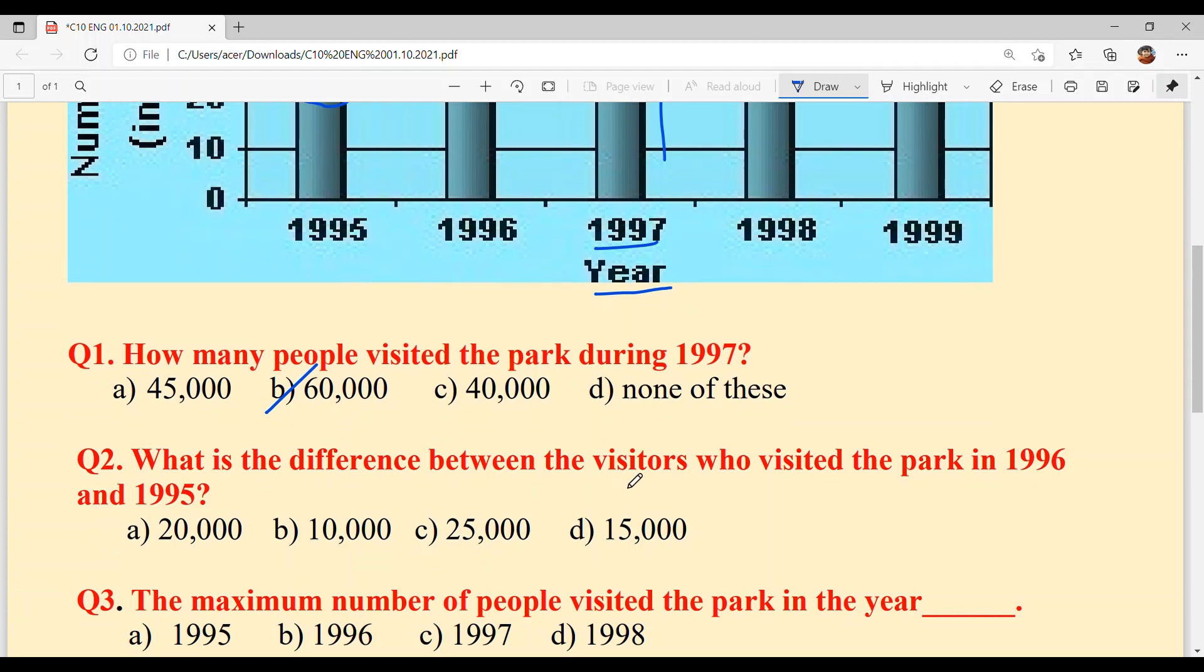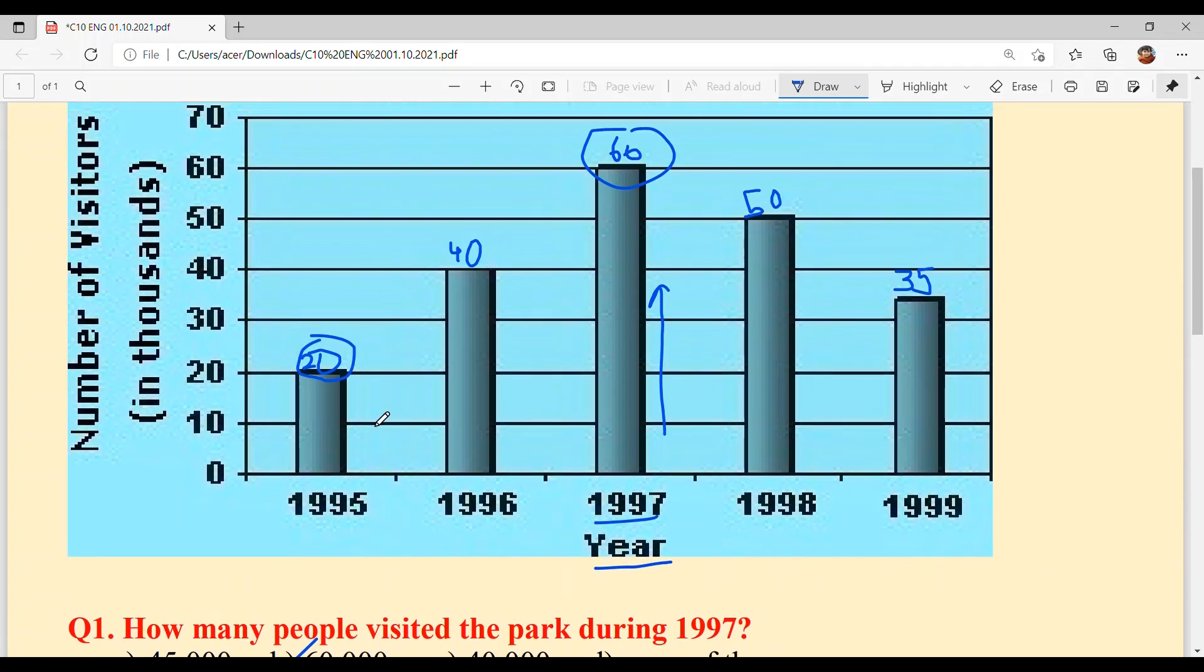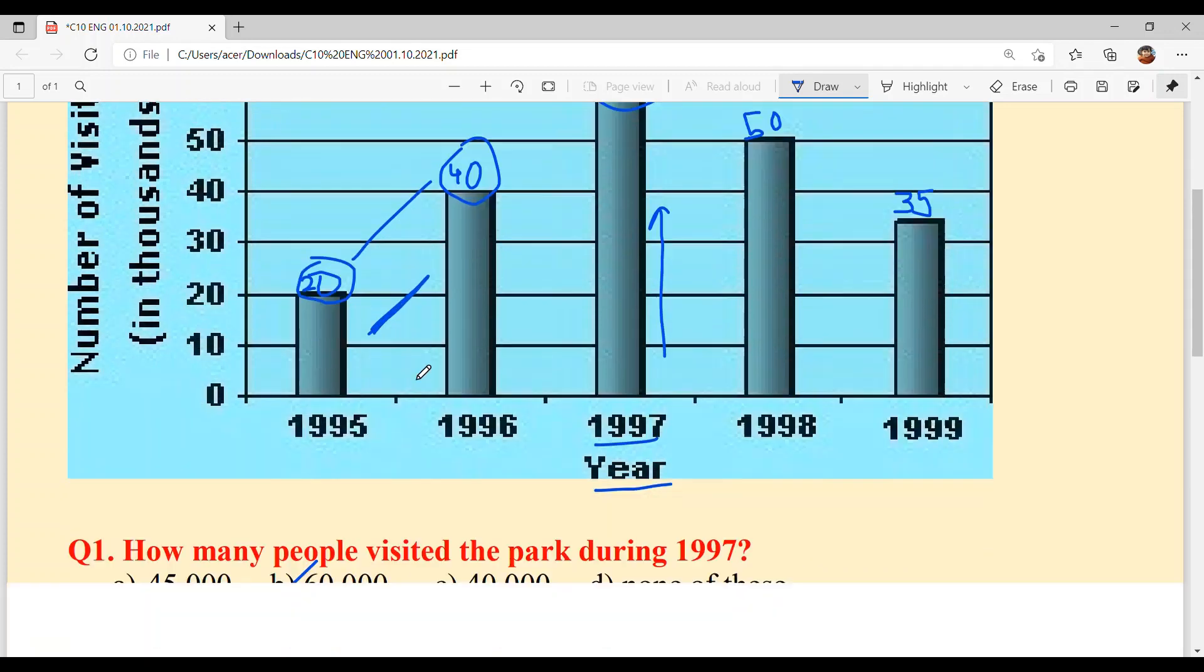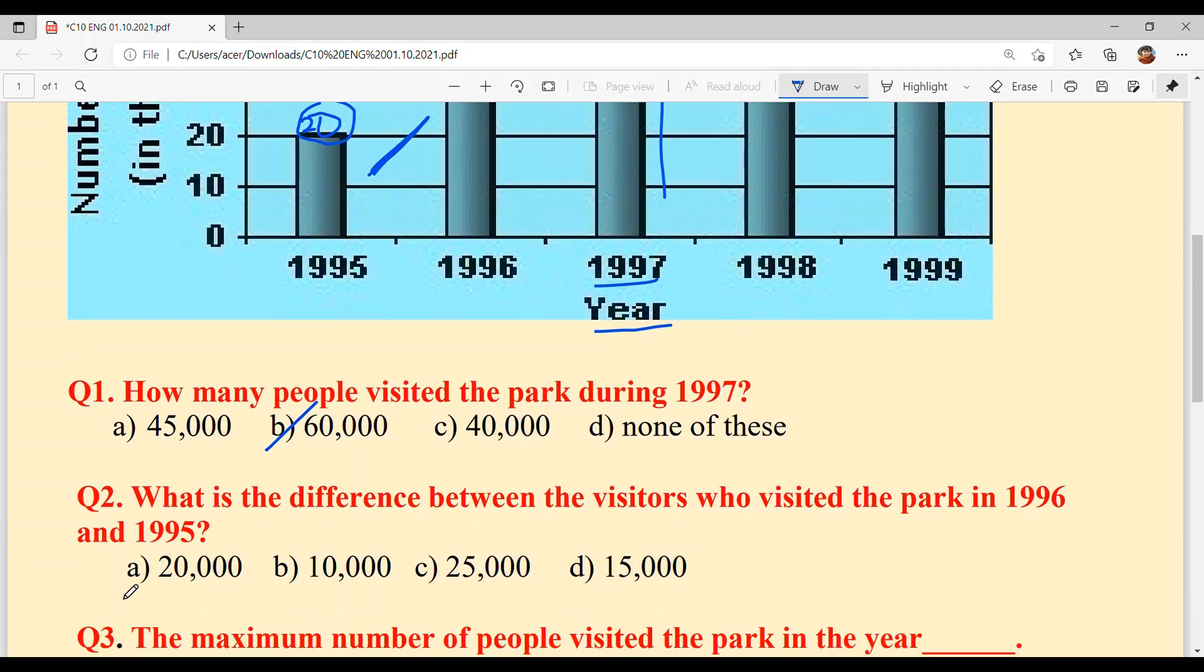Question 2: What is the difference between the visitors who visited the park in 1996 and 1995? What's the difference between these two? Easy and obvious. 40 minus 20 equals 20, so 20,000. Option A.